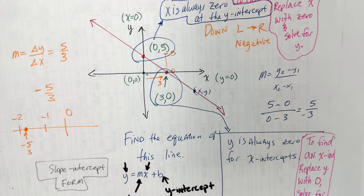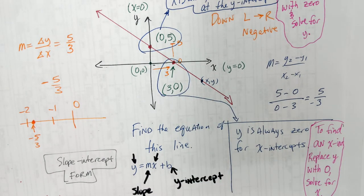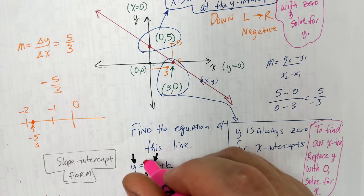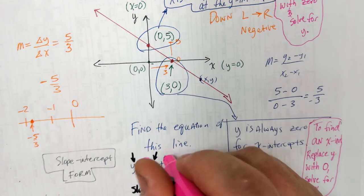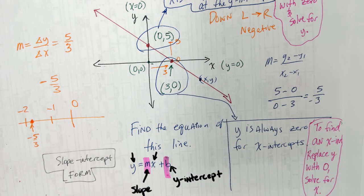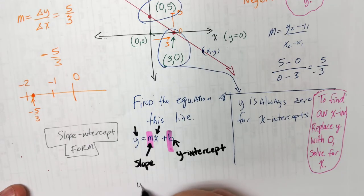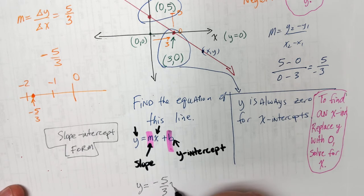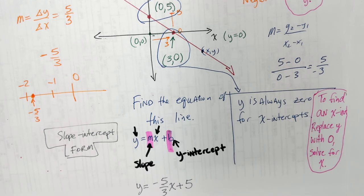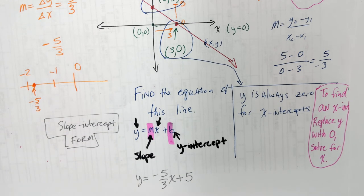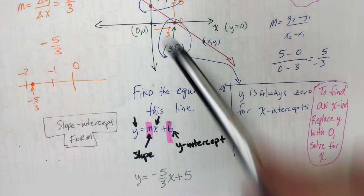To write the equation, you need two things: m and b. We already found both — slope is negative five-thirds, y-intercept is 5. So y equals negative five-thirds times x plus 5. That's the equation of that line — everywhere on that line is an answer to that equation.